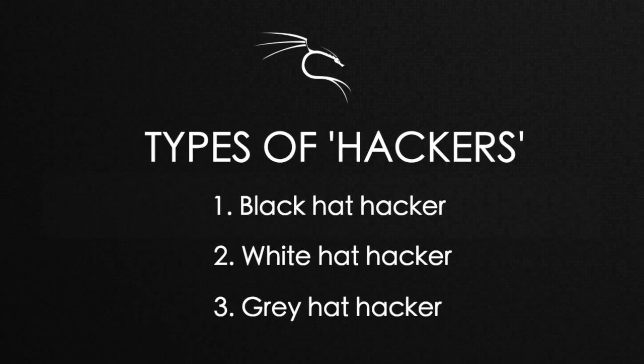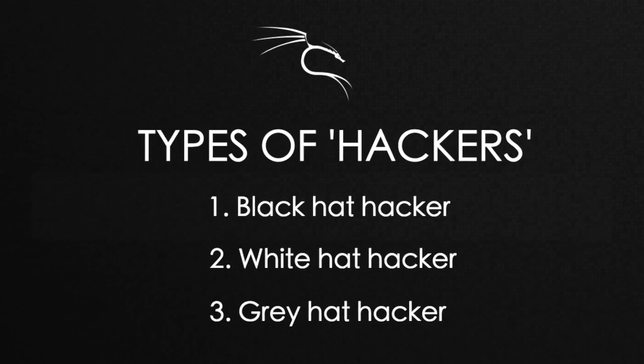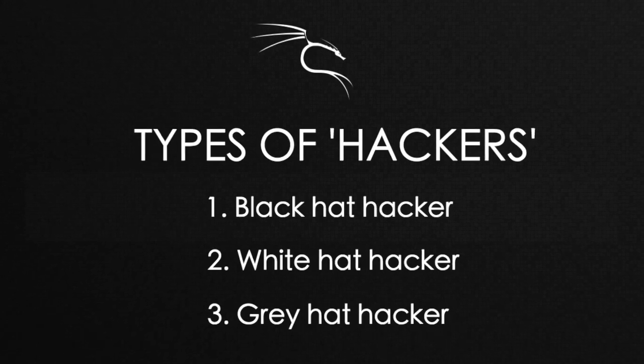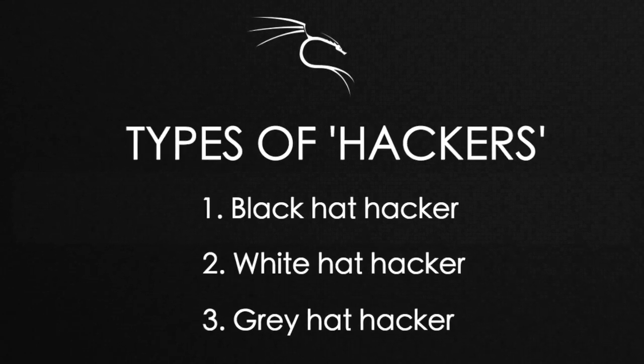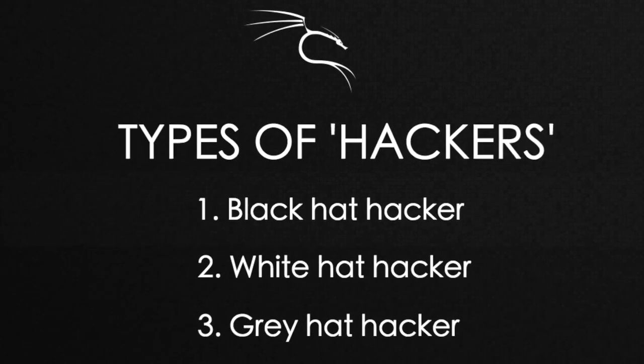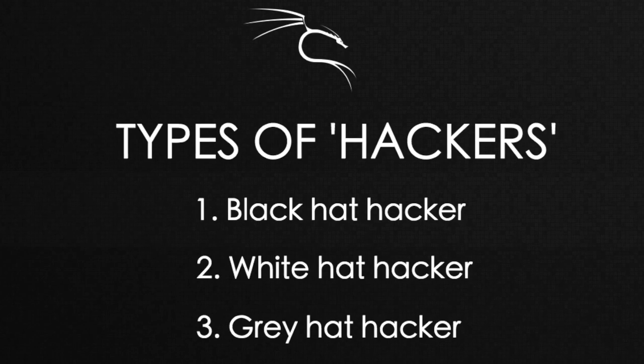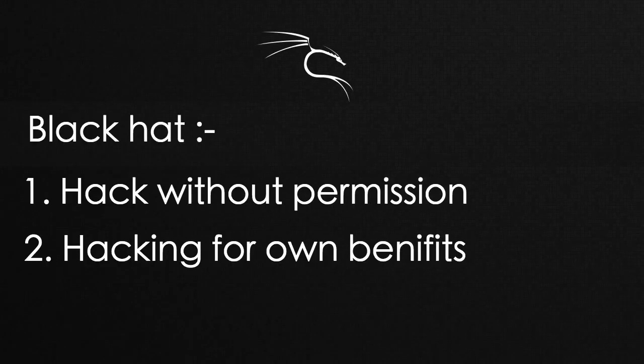So who are the different types of hackers that we have in the world? There are mainly three kinds of hackers: black hat hacker, white hat hacker, and a gray hat hacker. Black hat hackers are the ones who hack into the system for their own benefits without permission. They hack into systems to steal money, to steal passwords, to steal information — anything for their own benefit.